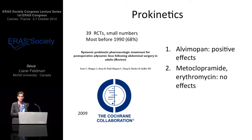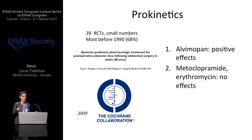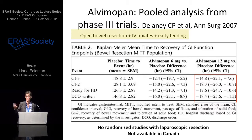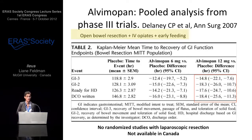Looking at prokinetics: alvimopan is a peripheral mu-receptor antagonist. It's approved in the United States but not in Canada or apparently much of Europe. For open bowel resection using IV opiates — not thoracic local anesthetics — in pathways that include early feeding, it does result in earlier return of bowel function by about 18 hours. There are no large randomized studies in laparoscopy, and it's expensive. Metoclopramide and erythromycin, a motilin agonist, do not appear to have an effect.